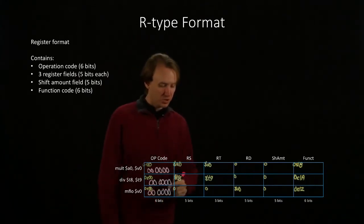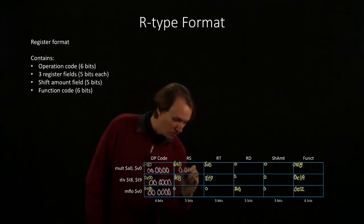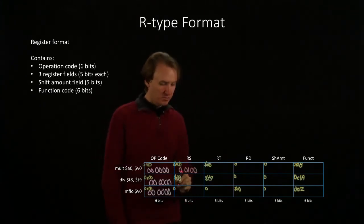A0 is register 4, so I will write down 4 in binary. V0 is register 2.